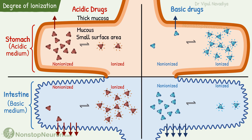You might ask: only a small portion is available for absorption, so how can absorption mainly occur in the intestine? The answer is: as the non-ionized molecules get absorbed, their concentration falls. This allows the conversion of ionized molecules into non-ionized ones, and then they are also absorbed. This keeps happening, and as the drug stays for a much longer time in the intestine, there is enough time for absorption.